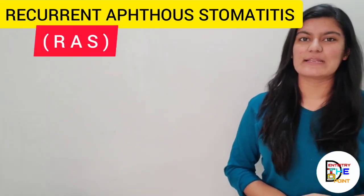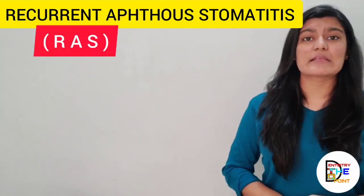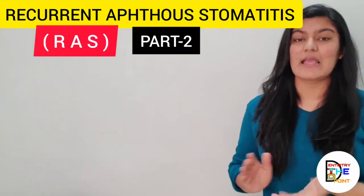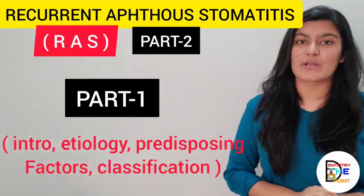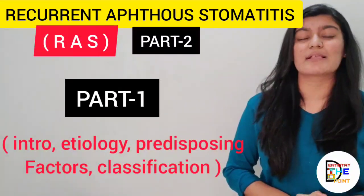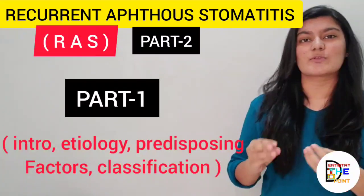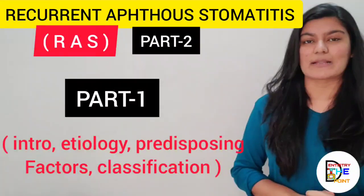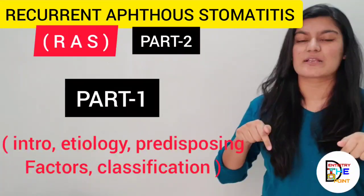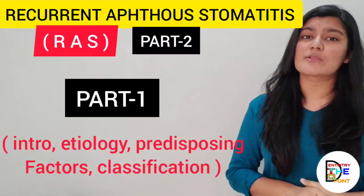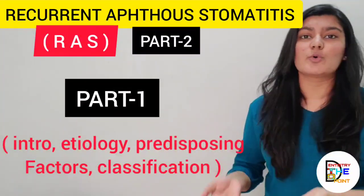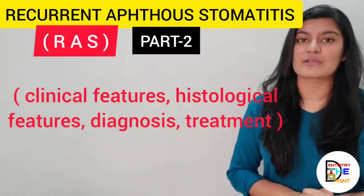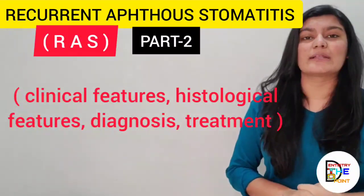Hi everyone, welcome back to our channel Dentistry to the Point. This is a continuation video, Part 2, on Recurrent Aphthous Stomatitis (RAS). In the first part we discussed the introduction, etiology, predisposing factors, classification, and I also gave short tricks and mnemonics. Please check that video — the link is in the description box. Watch Part 1 first, then Part 2, wherein we will discuss clinical features, histological features, diagnosis, and treatment.